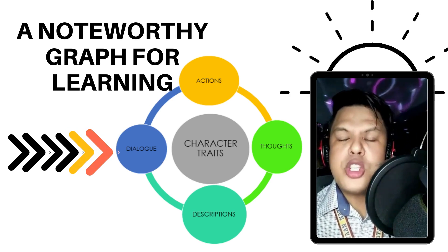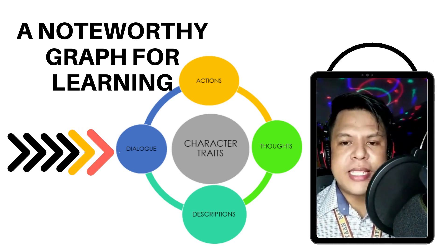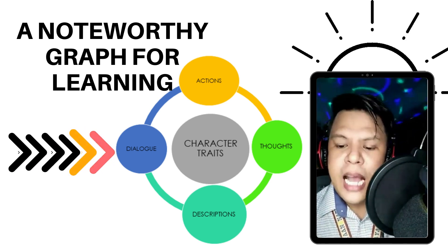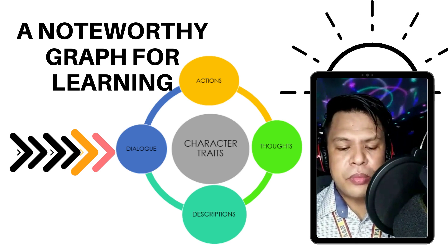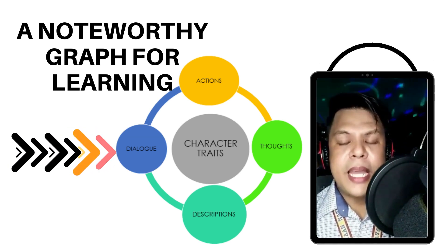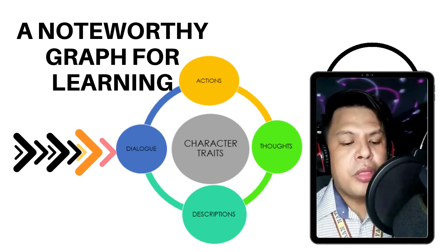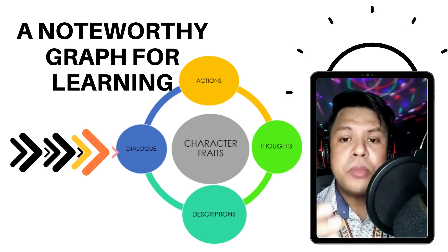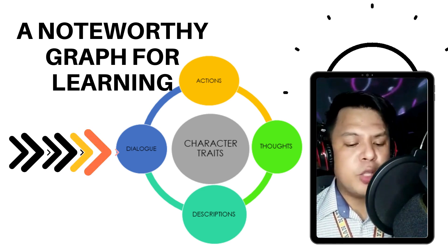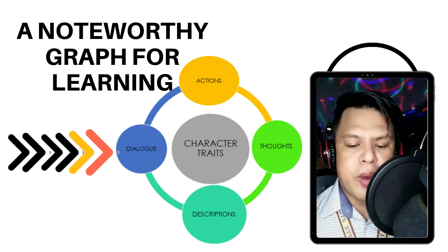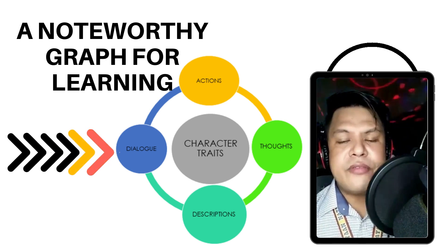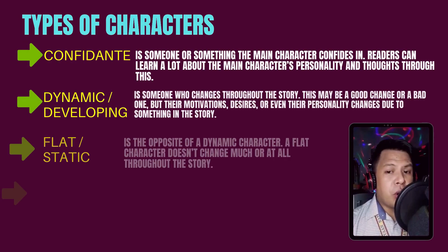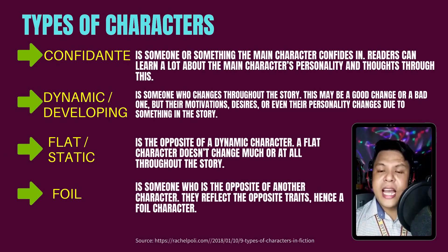Now, we need to go deeper and study the Smart Art graphic. Character traits is in the center, and on its sides are: the dialogue of the character, the actions made by the antagonist and the protagonist, their thoughts while executing the dialogue, and their roles. Also, descriptions in which they will be able to portray and prepare their lines, delivery, set-up, and blockings.